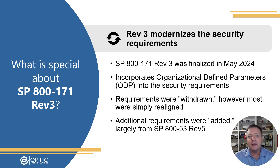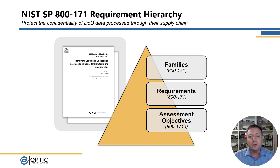Specifically, the NFO, or security requirements assumed to already be in place within non-federal organizations, were tailored back into 171 Rev 3 after significant evidence that this assumption by NIST was incorrect. Rev 3 maintains the same hierarchy for grouping similar security requirements as the previous Rev 2. However, there are now 17 families, 97 security requirements, and 422 assessment objectives. This represents an overall decrease in the number of requirements but a significant expansion in the number of assessment objectives, highlighting that just because the requirements have decreased doesn't mean that there's less work to be done.